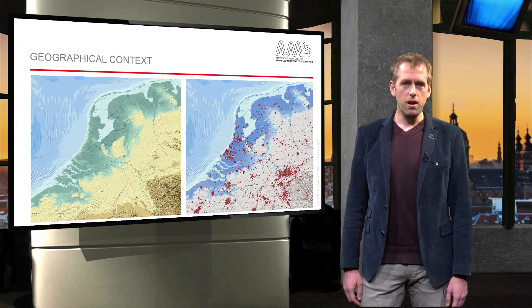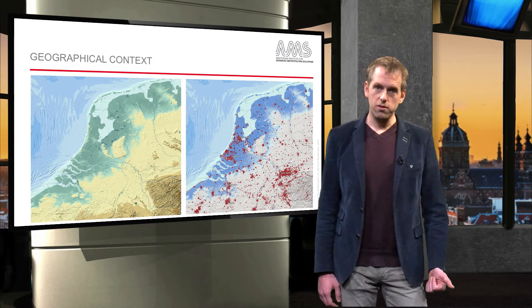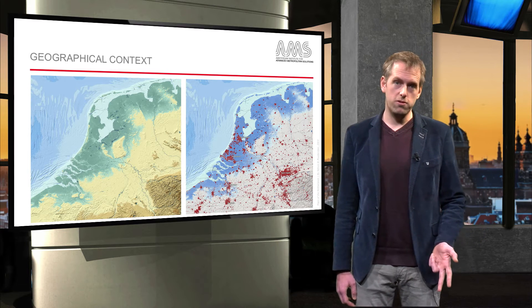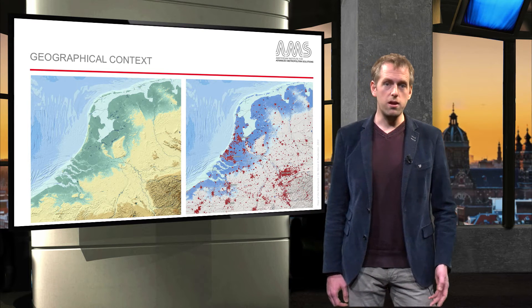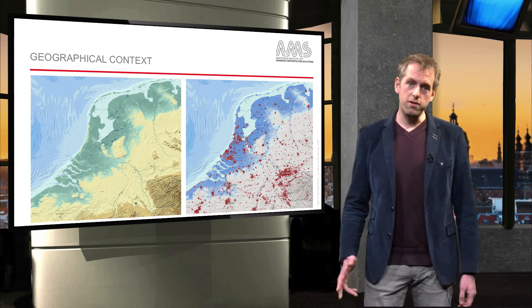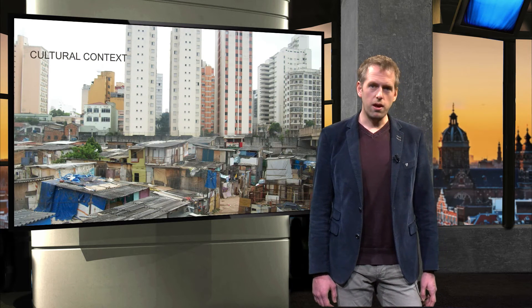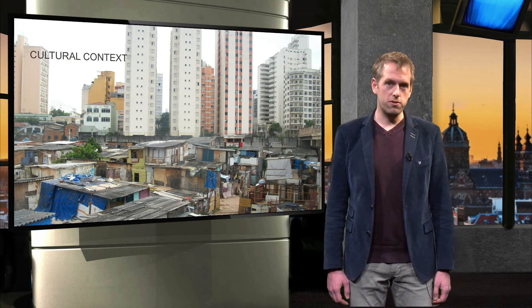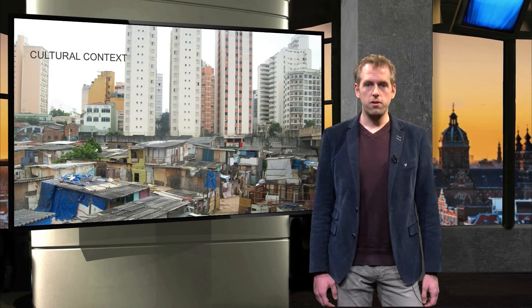Let us now take a look at the context of our study. In the geographical context of an urban environment, several factors are relevant, such as climate, soil conditions and high-risk situations. The Dutch Delta to a large extent lies beneath sea level, as you can see in green in the image on the left. The image on the right clearly shows the urban areas that would be underwater. Looking at the cultural context, other factors play a role, like norms and values and social interactions. Also the planning system is relevant, as you can see here. The separation between slums and high-rise buildings leads to social segregation.